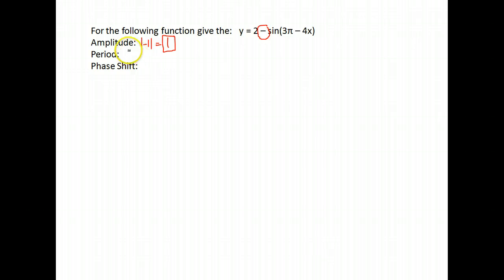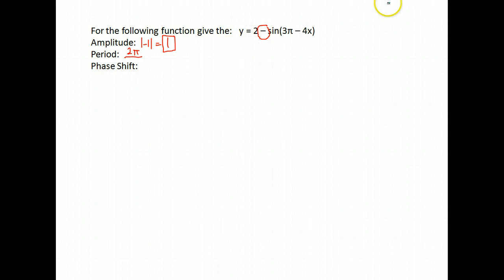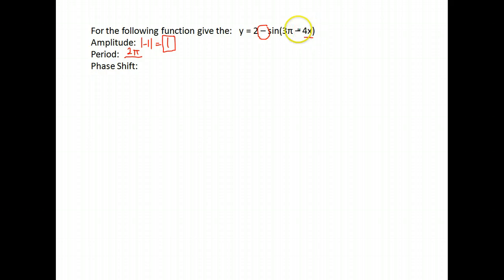For our period, the normal period for sine is 2π. We're going to divide that by whatever number is directly in front of the x. Notice the x is on the end rather than where we normally see it — don't be fooled by that. We're not going to worry about the sign; we just divide by 4. So we end up with a period of π over 2 for this function.